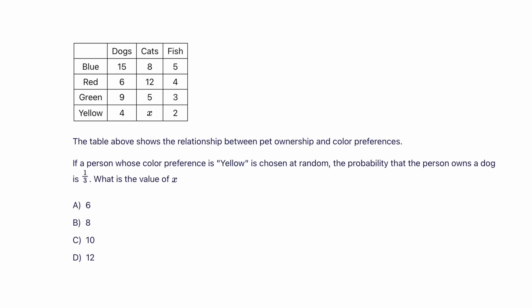This question is from problem solving and data analysis and it uses the idea of conditional probability. Before we dive into solving this problem, let's understand the question. They've given us a table that shows the relationship between two variables: pet ownership and color preference. As soon as you see a table showing the relationship between two variables, you're dealing with a two-way table, and there are specific ways to calculate probabilities using a two-way table.